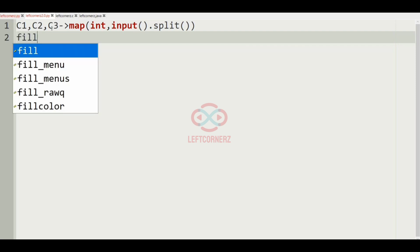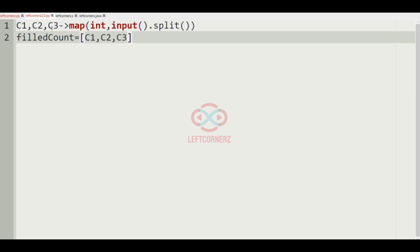And after getting our inputs, we'll have the filled count and inside it will have the possible combinations: C1, C2, C3, C1 plus C2, C1 plus C3, C2 plus C3, and C1 plus C2 plus C3. So these are the combinations.